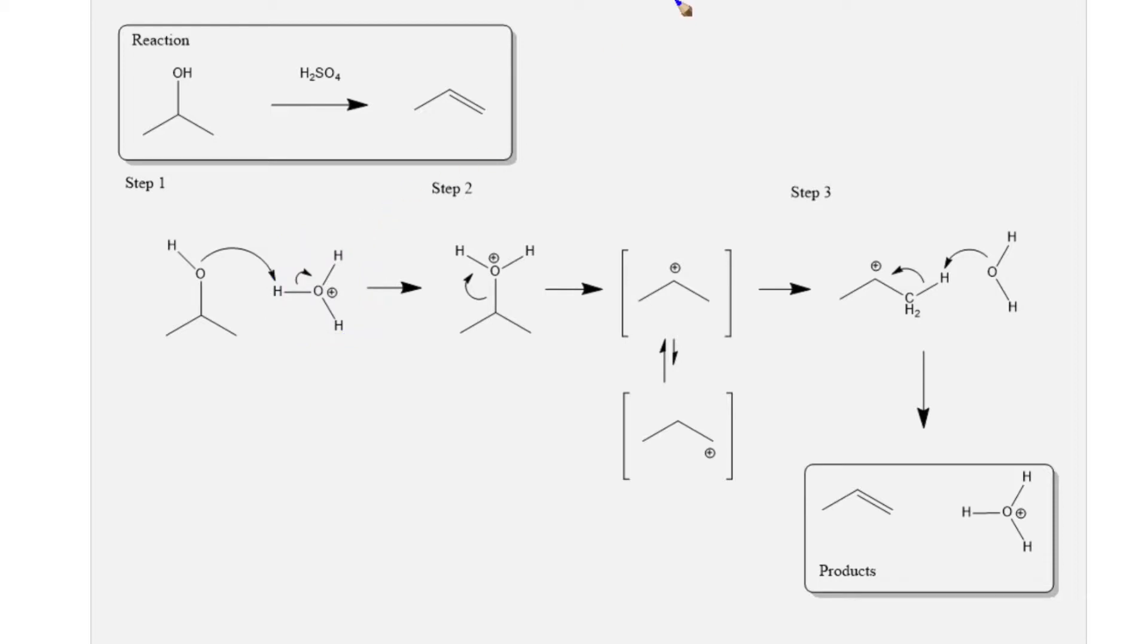Although this reaction has its own name, dehydration of alcohols, it is an example of an E1 elimination mechanism. The alcohol attacks the hydronium ion with lone pairs of electrons on the oxygen and removes a proton.